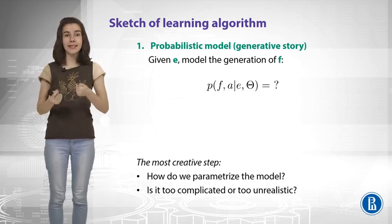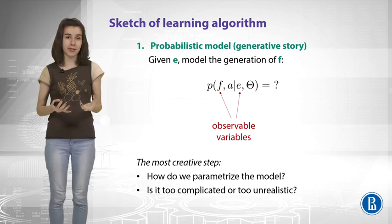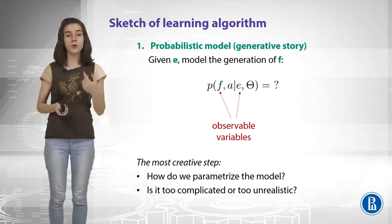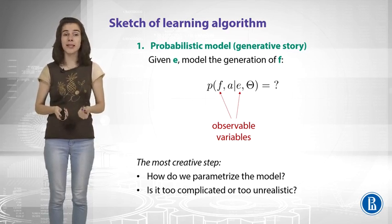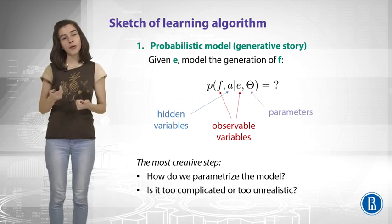We have our sentences E and F. So this is our observable variables. Now we have also word alignments. We do not see them, but we need to model them somehow. So this is hidden variables. And we have parameters of the model.